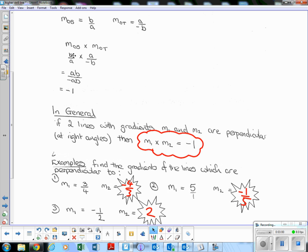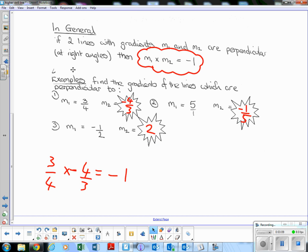We know the gradient is 3 over 4, so comparing that here, the perpendicular gradient is going to be basically flip that and change the sign. So I've done it down here.